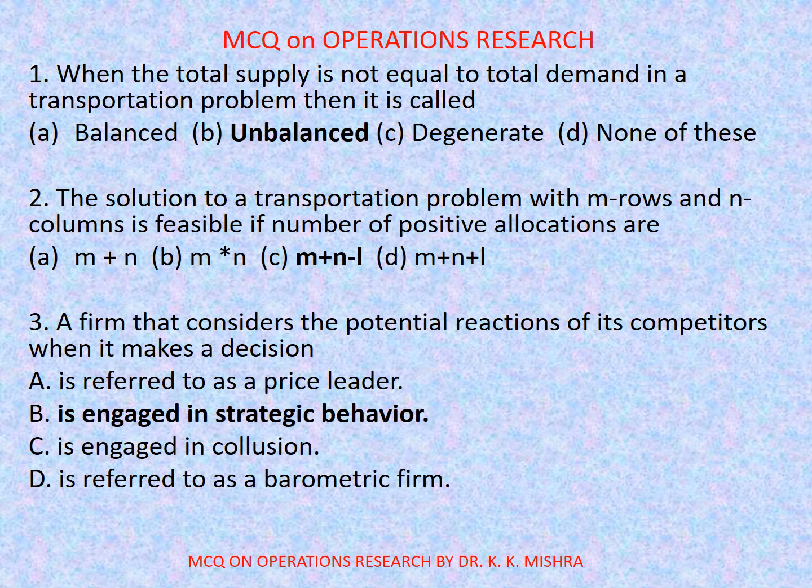Question number 3: A firm that considers the potential reactions of its competitors when it makes a decision — options are: a) is referred to as a price leader, b) is engaged in strategic behavior, c) is engaged in collusion, d) is referred to as a barometric firm. Correct option is b) is engaged in strategic behavior. Now move to next slide.